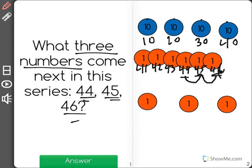So if we ended with 46, I know that 1 more than 46 is 47. And then I'm going to add 1 more to get 48.